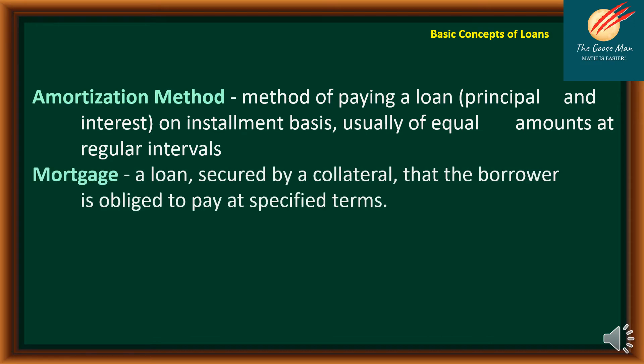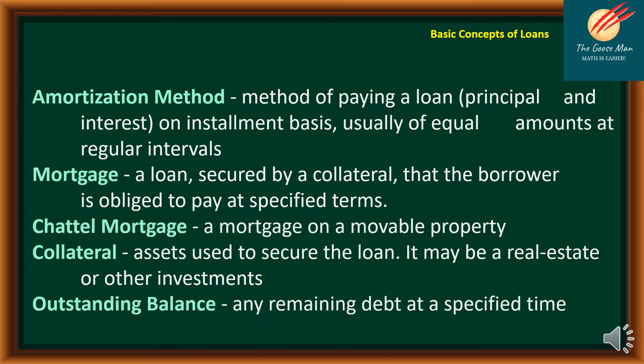The next term is mortgage — a loan secured by a collateral that the borrower is obliged to pay at specific terms. Collateral is the assets used to secure the loan; it may be real estate or other investments such as the title of land or your car. A chattel mortgage is a mortgage on a movable property.